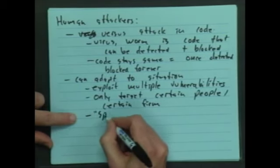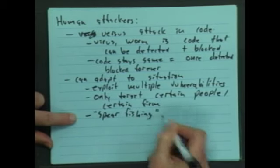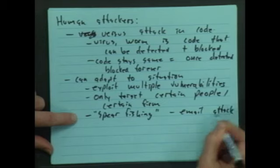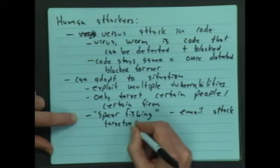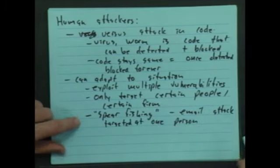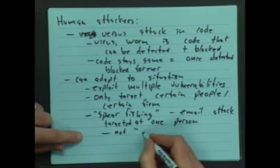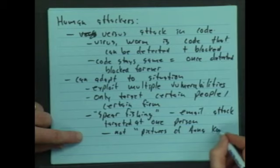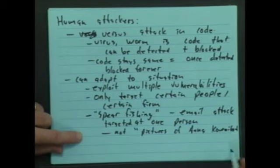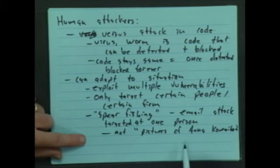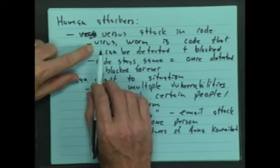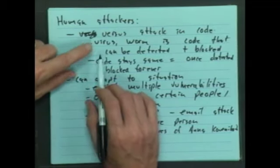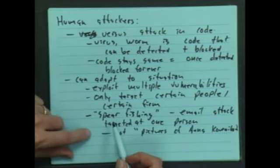Spear phishing is an email attack targeted at one person. Here we're not having pictures of Anna Kournikova. You guys remember that one? One of the viruses was you clicked in your email for pictures of Anna Kournikova and lots of people did it. There was a great one that was 'I love you' and you'd click on it because you wanted to know why your boss loved you, and then you were infected. But with spear phishing, it's to one person.